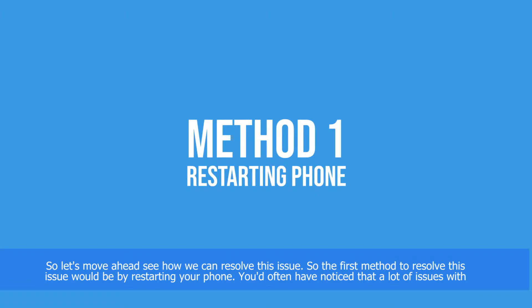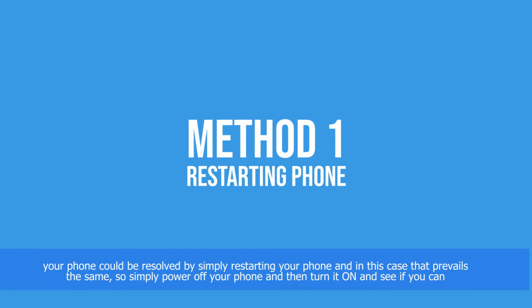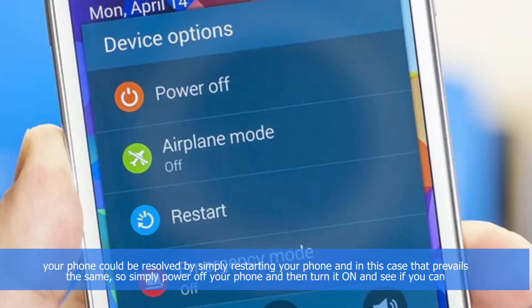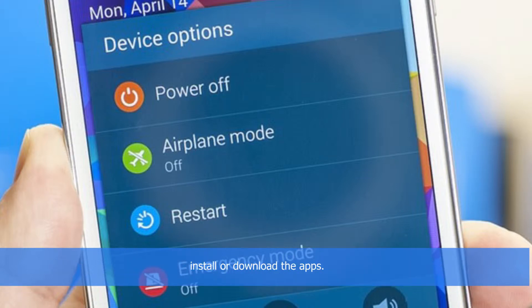The first method to resolve this issue would be by restarting your phone. You would often notice that a lot of issues with your phone can be resolved by simply restarting it, and in this case that applies as well. Simply power off your phone, turn it back on, and see if you can then install or download apps.